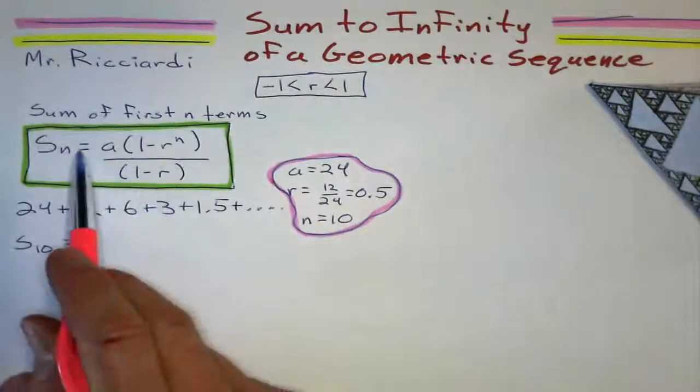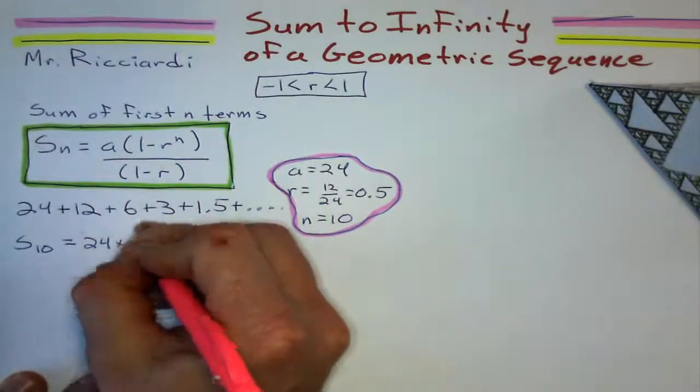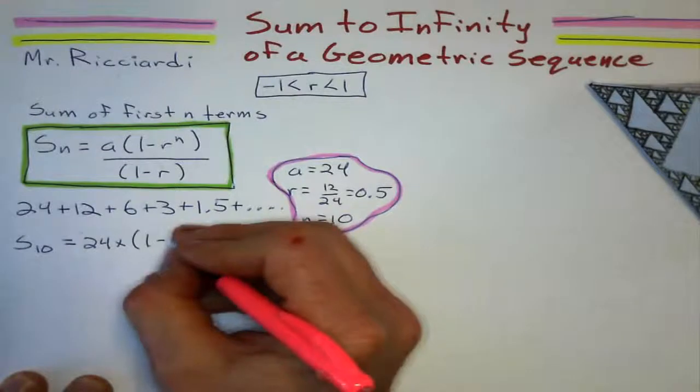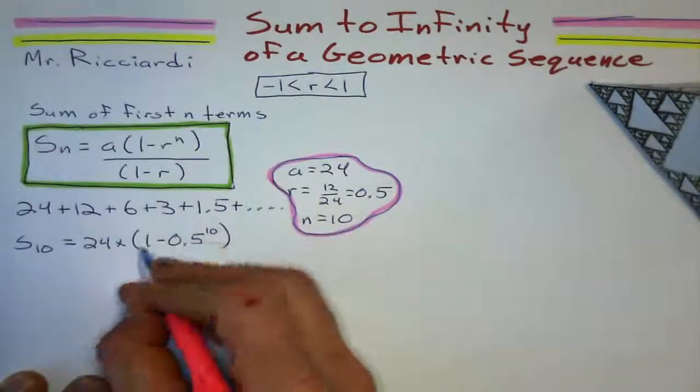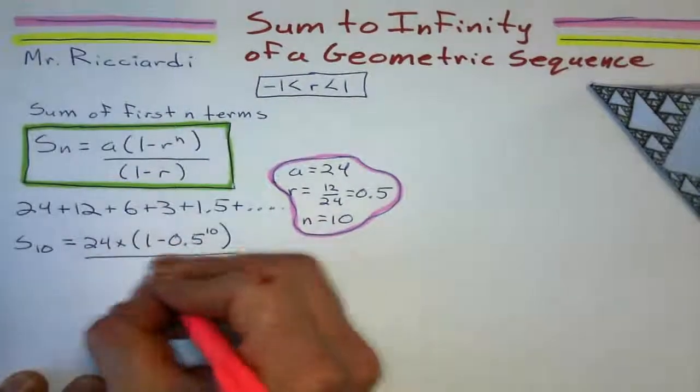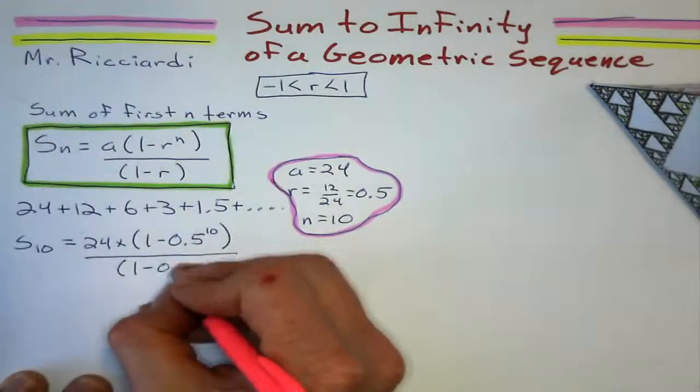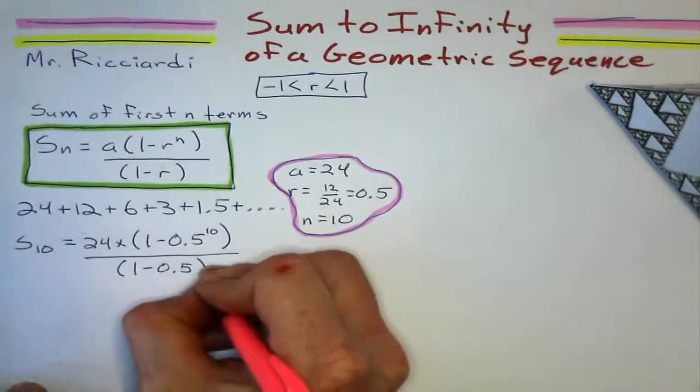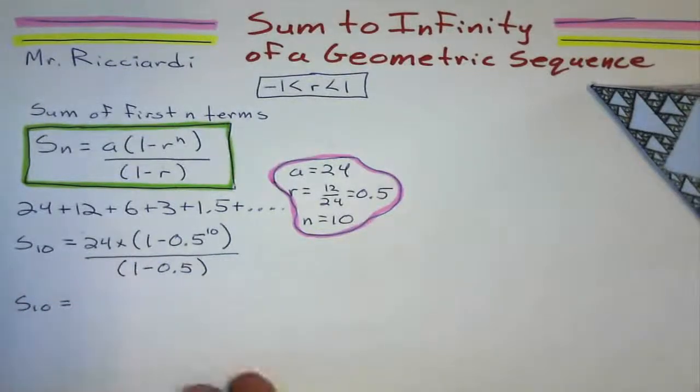Let's see what I get. And we'll use this formula here to find the sum. 24 times 1 minus 0.5 to the power of 10, substitute it all in there, all over 1 minus a half. I'll write that half as a decimal. And what do I get?